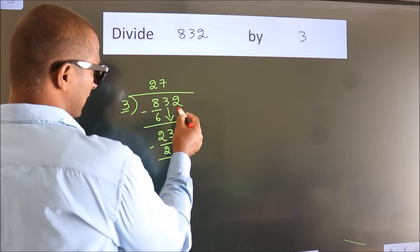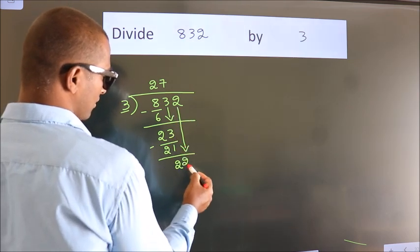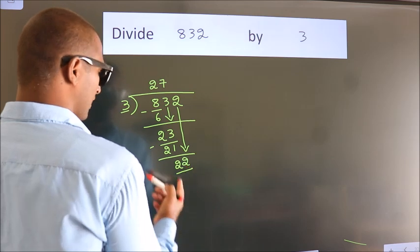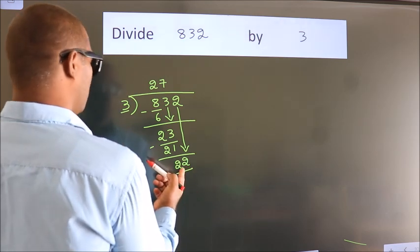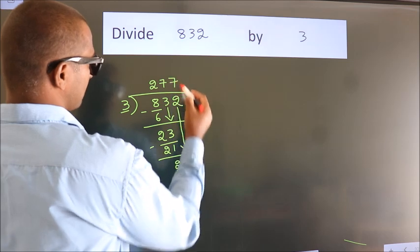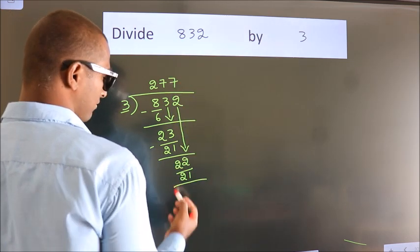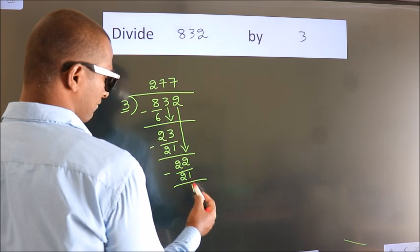After this, bring down the beside number. So 2 down, making 22. A number close to 22 in the 3 table is 3 times 7 is 21. Now we subtract. We get 1.